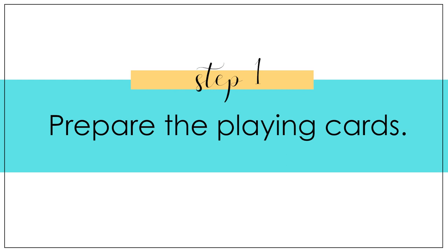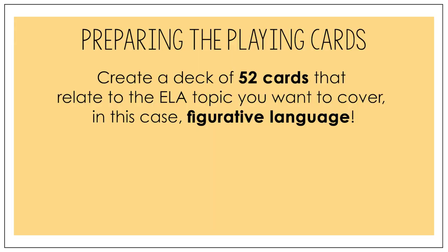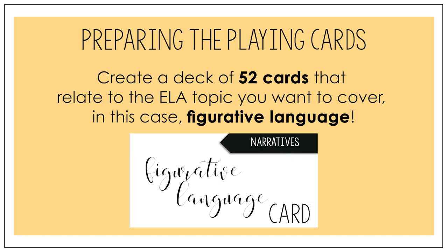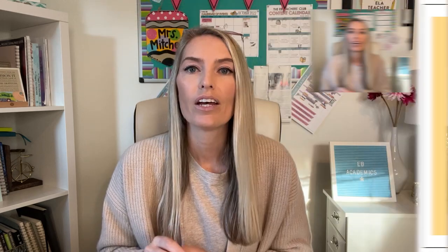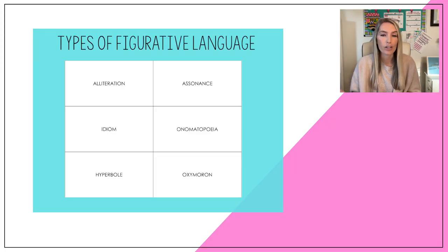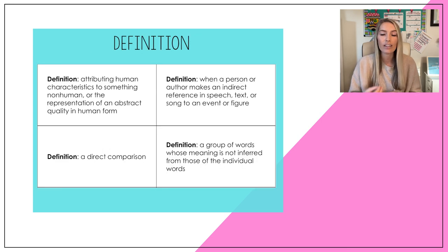Here's how you set up this game to equip students with that knowledge. The first thing you do is prepare the playing cards. To make the cards for a game of Spoons, you need to create a deck of 52 cards that relate to the ELA topic you want to cover — in this case, figurative language. On each of the 52 cards, you will want to have either a type of figurative language, a definition, or an example containing that type of figurative language.